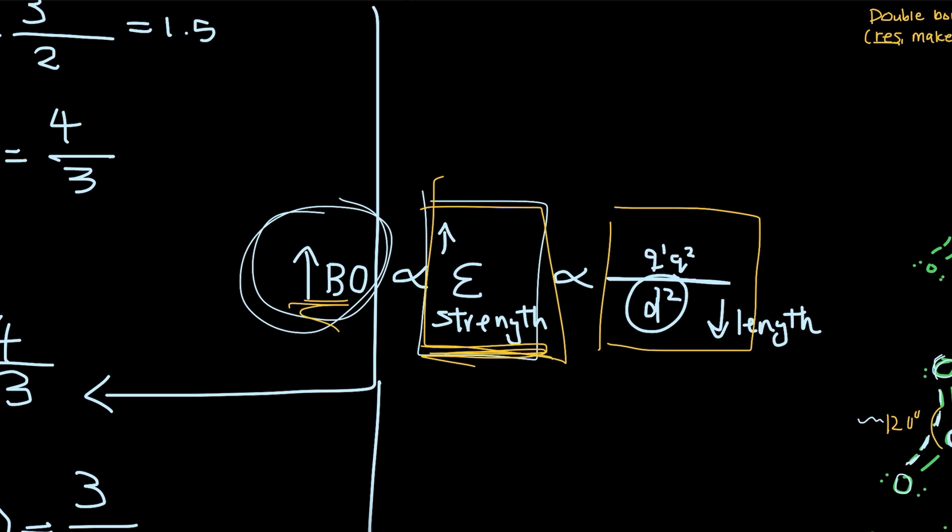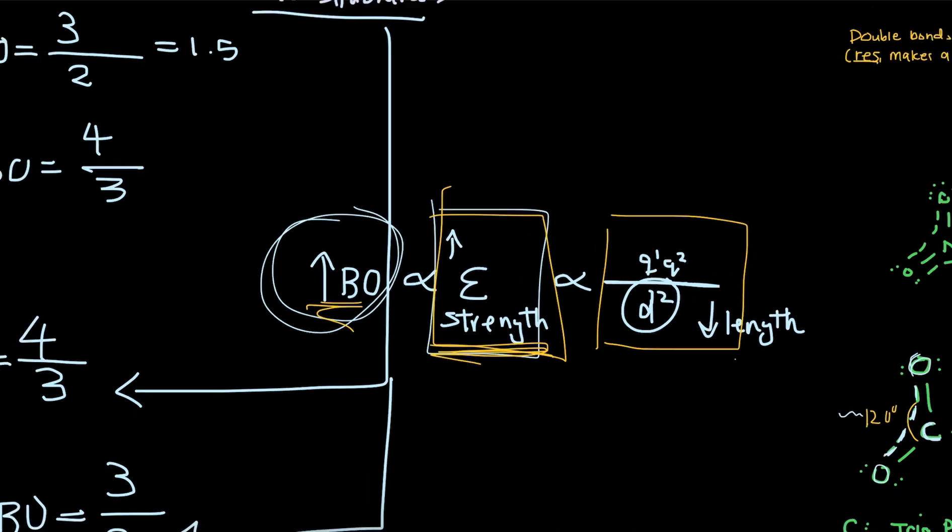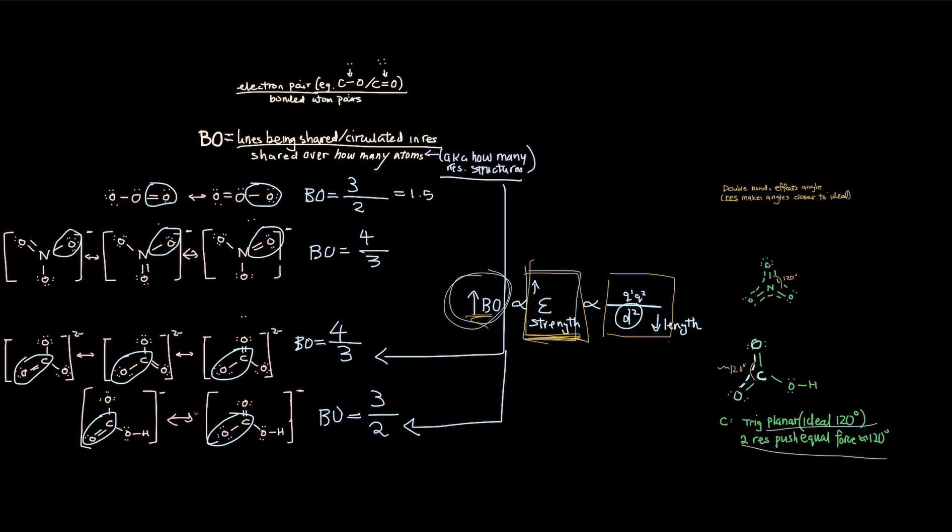And this relationship shows us that the increased bond order means increasing bond strength, which means decreasing bond length, because this part here is inversely proportional. So that means the strongest bond will have the highest bond order and the smallest distance between them.